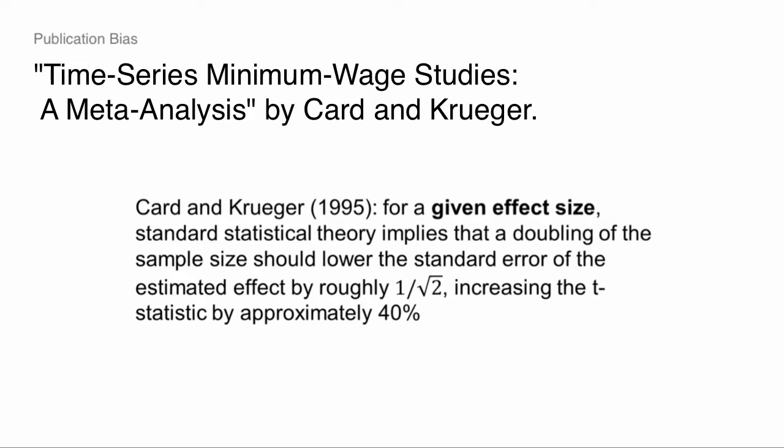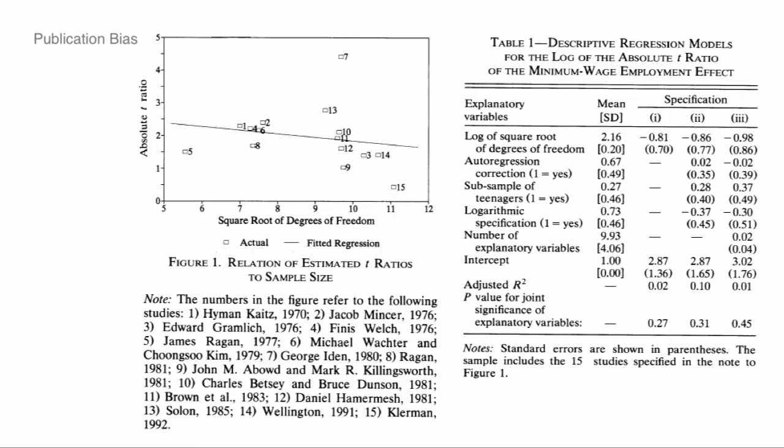For a given effect size and a given research design, if you double the sample size, what's going to happen to precision? Precision is going to go up by root two — or about 41%. So sample size goes up, and given the same design, the t-statistic should go up. So do they see that? When they have more data, do they see t-statistics that are twice as large? This is the square root of the degrees of freedom on one axis.